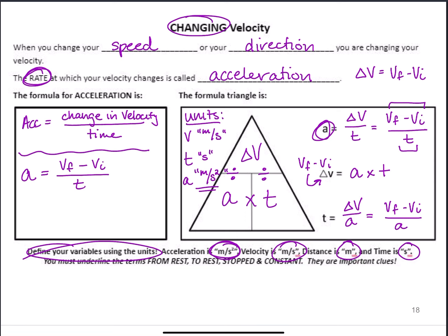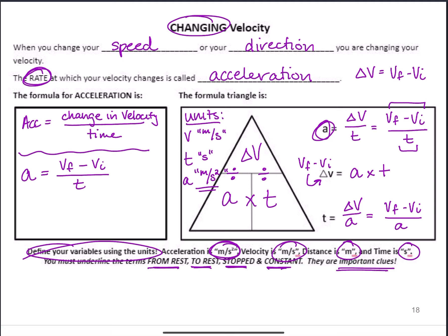You need to underline the terms 'from rest,' 'to rest,' 'stopped,' and 'constant,' because these are going to be important clues when we're working our problems.